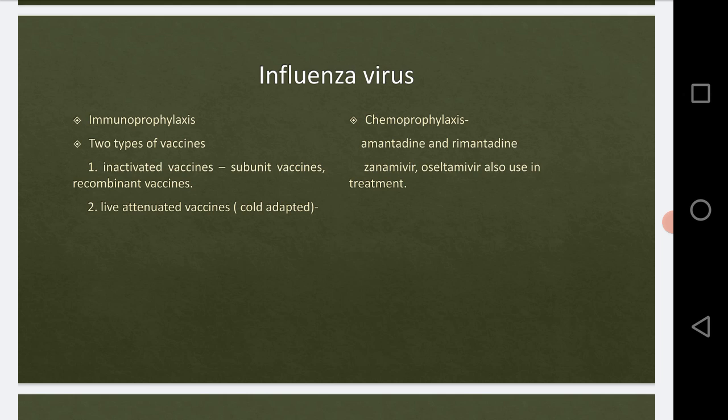To summarize the vaccine types: inactivated vaccines are used in immunoprophylaxis; subunit vaccines reduce the toxic effects of the original inactivated vaccine; recombinant vaccines provide immunity against various antigenic variations of the virus; and the second major type is the live attenuated vaccine, also called the cold-adapted vaccine.